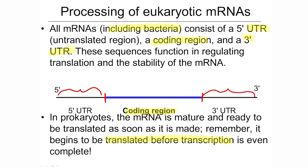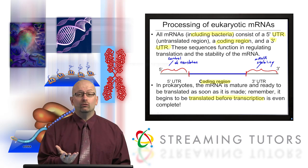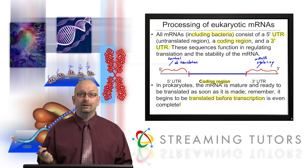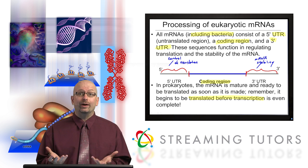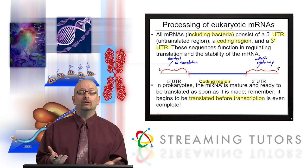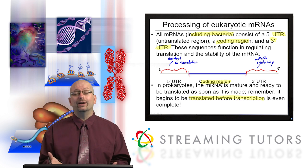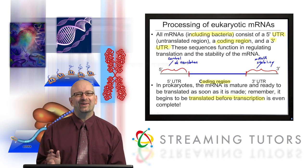The 5' UTR and the 3' UTR — we're not going to go into great detail — but the 5' untranslated region seems to have something to do with control of translation, whether in bacteria or eukaryotes. It may play a role in guiding messenger RNA towards a ribosome. The 3' region seems to have to do with mRNA stability. The coding region brings the information from the gene, but there are regulatory aspects built into this molecule.